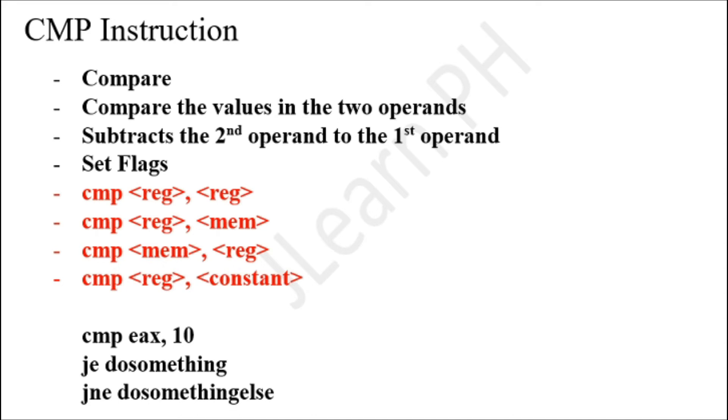Compare instructions are usually followed by a conditional jump. For example, we have here compare EAX by 10, meaning we are comparing the value inside EAX to 10. If it is equal, JE (jump equal) means if EAX is equal to 10 then do something. If it's not equal, do something else.